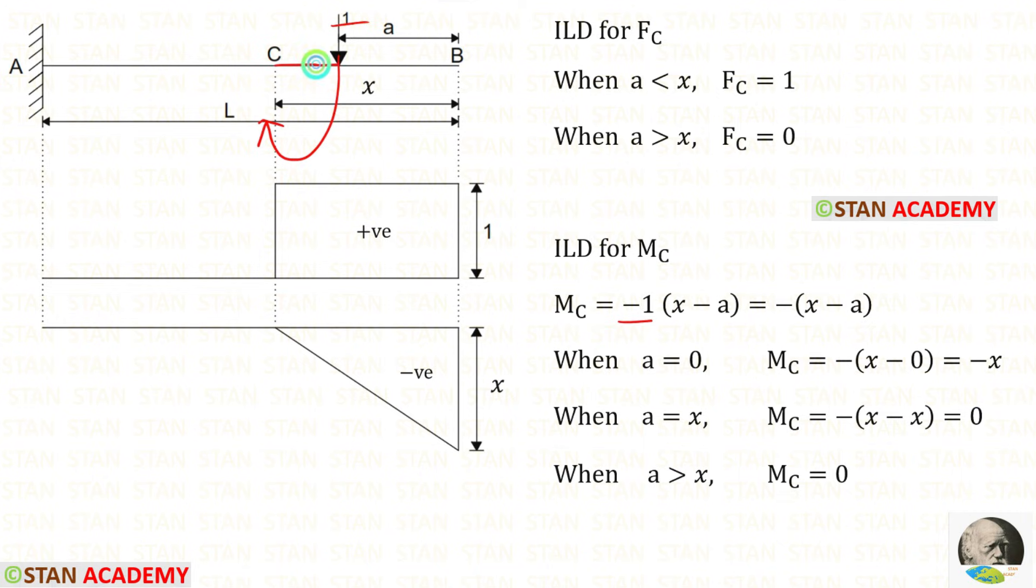For this load, we have to take this distance. This distance is x minus A. At point B, A will be 0. So for the moment at C, we will get minus x.